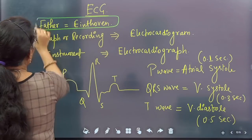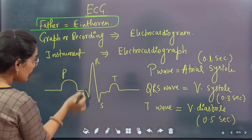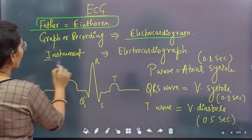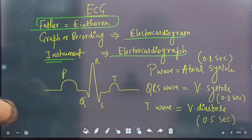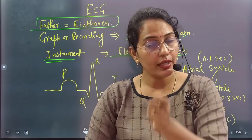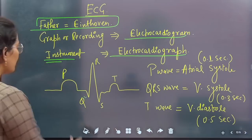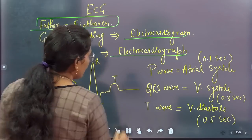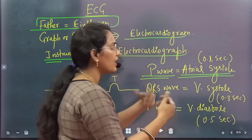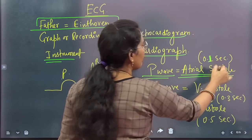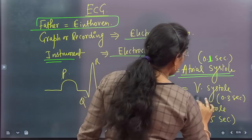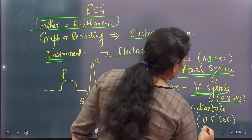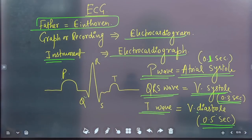Next we look at ECG. The father of ECG was Einthoven. The graph produced is called the electrocardiogram (gram = recording, graph = instrument). In ECG there are waves: P, QRS complex, and T. The P wave indicates atrial contraction (atrial systole) — 0.1 seconds. The QRS complex indicates ventricular contraction (ventricular systole) — 0.3 seconds. The T wave indicates ventricular diastole — 0.5 seconds. Direct questions can be asked from here.